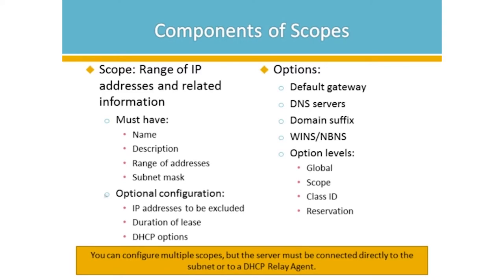The default and most common level is at the scope. You can configure more than one scope on a DHCP server, but the server has to be connected directly to each subnet that the scope is answering to. If it is not, you'll have to deploy a DHCP relay agent in order to relay requests over to the appropriate server.